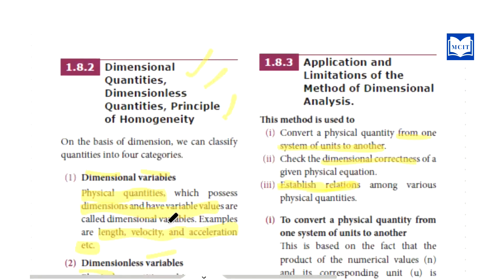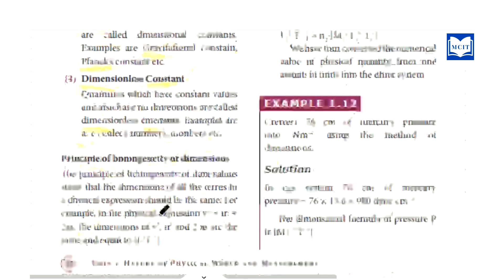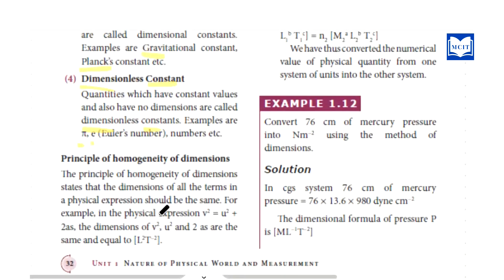So these are the four categories: dimensional quantities and dimensionless quantities, each split into variables and constants. Now the principle of homogeneity is very important. In any expression, all the terms must have the same dimension. For example, consider the equation v² = u² + 2as.